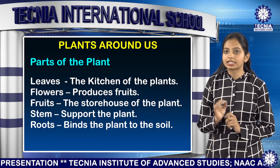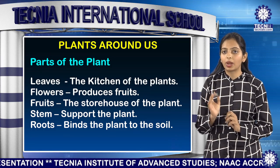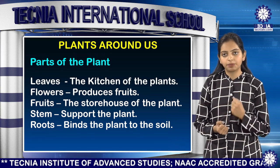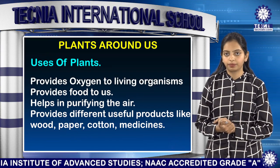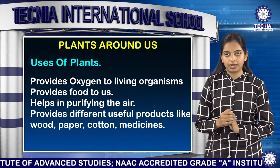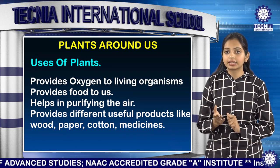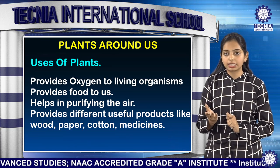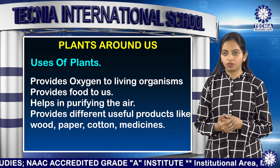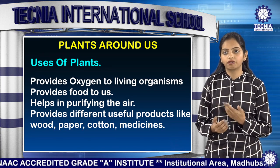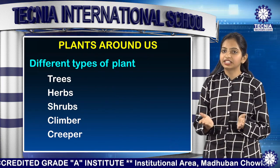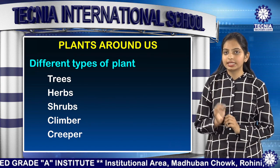On the other hand, stems provide support to the plant and roots bind the plant to the soil. There are different uses of plants — it provides us oxygen to live, it provides us various useful things like medicines, woods etc. There are different types of plants like trees, shrubs, herbs, climbers, creepers etc.